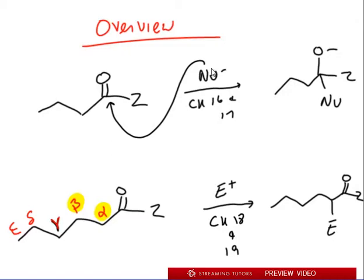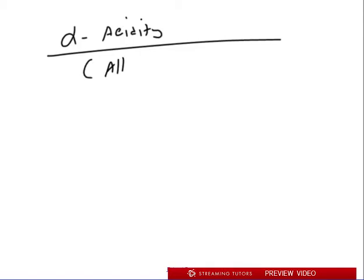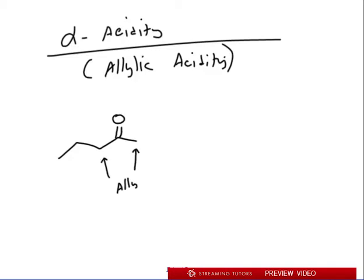Let's talk about alpha acidity. Alpha acidity is actually—I don't want you to think of it as alpha acidity, I want you to think of it as allylic acidity. That is really the characteristic we're working with. We've talked about that last semester. Remember what allylic is? When you have a double bond, it's the atom that's next to the double bond.